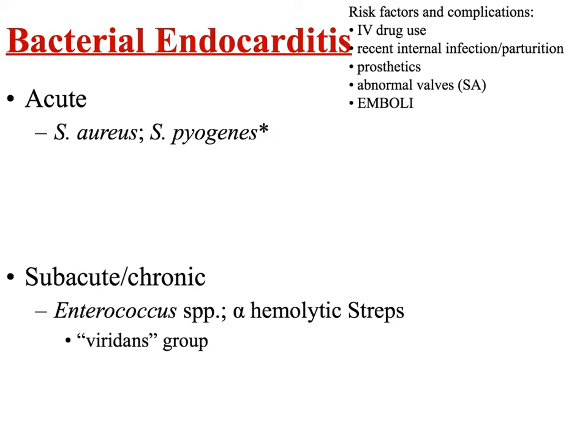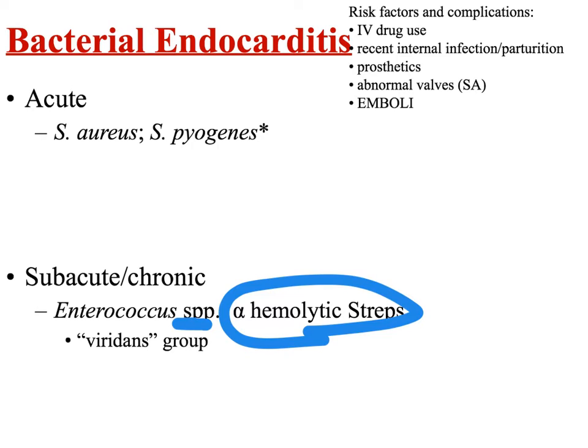Subacute endocarditis is quite different. Here you're more often than not looking at an Enterococcus species — their taxonomy is a bit of a mess and it doesn't really matter which species, as they all behave quite the same clinically. In addition, you can see alpha-hemolytic streps or group D streps: Strep mutans, mitis, sanguis, and related organisms. Clinicians sometimes refer to these as the viridans group — and as a taxonomist I'll note that 'Streptococcus viridans' is not actually a real organism name, though you will hear it said.